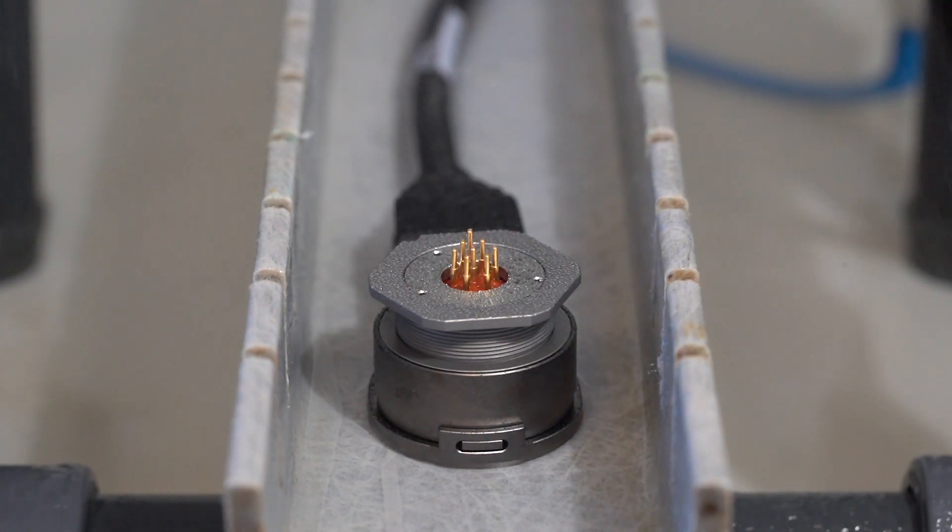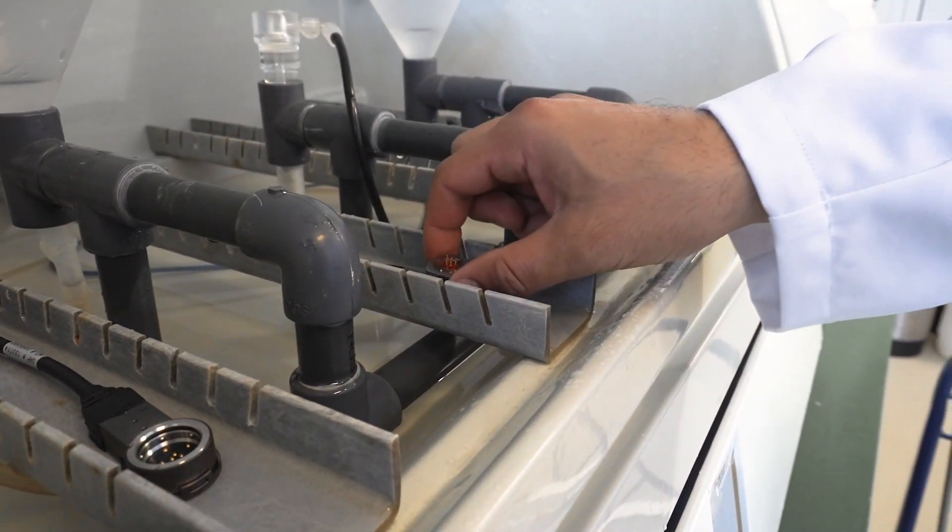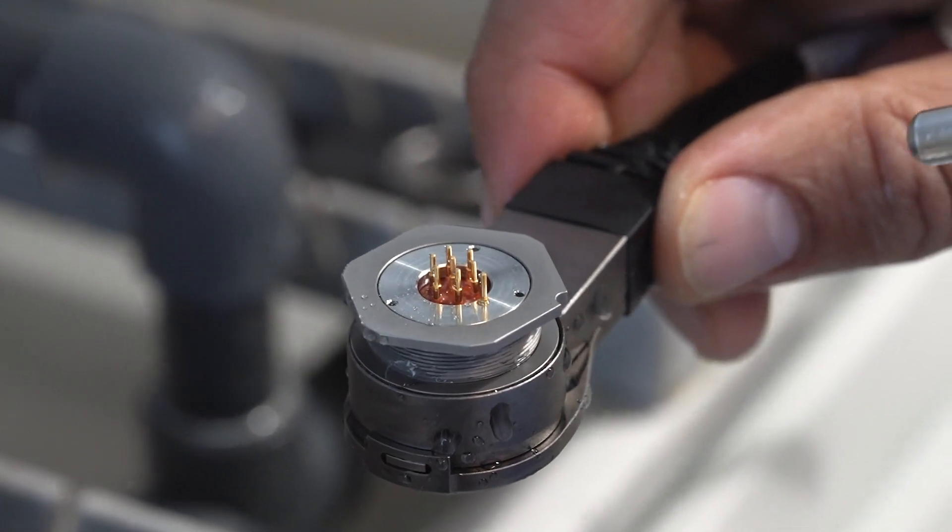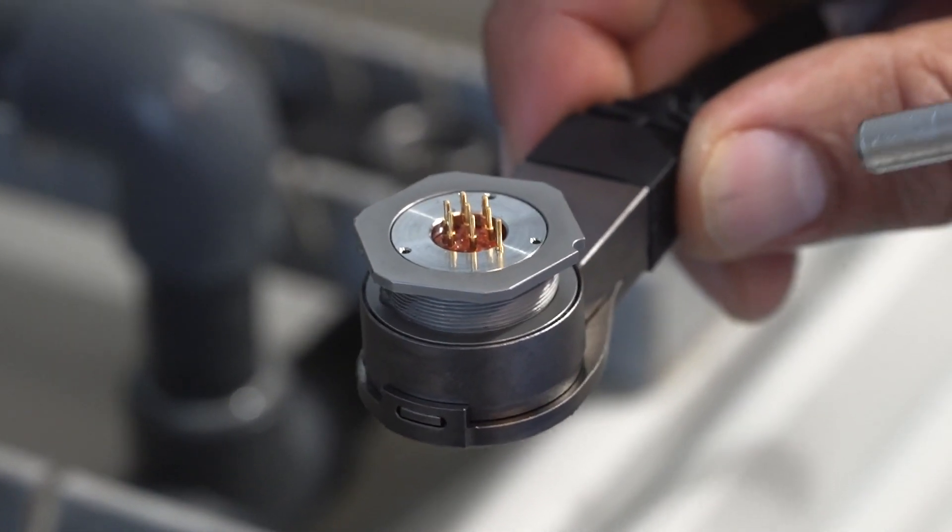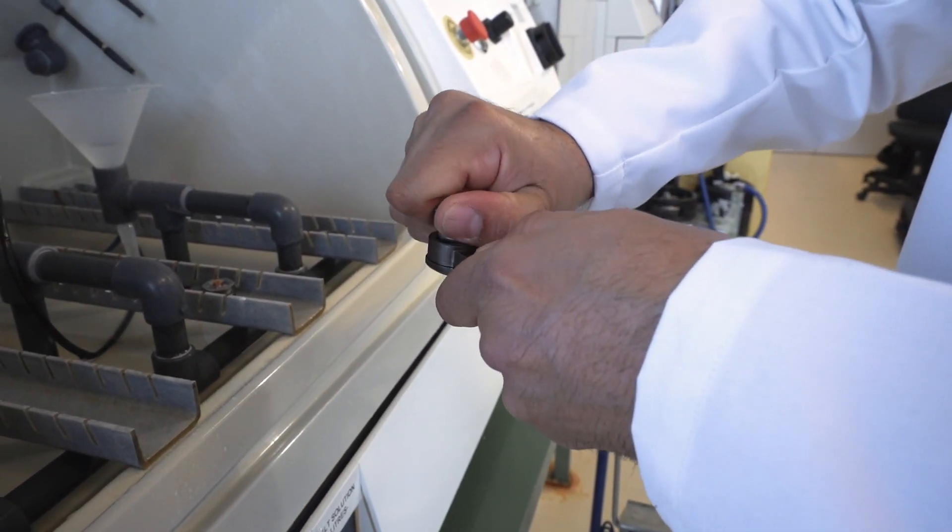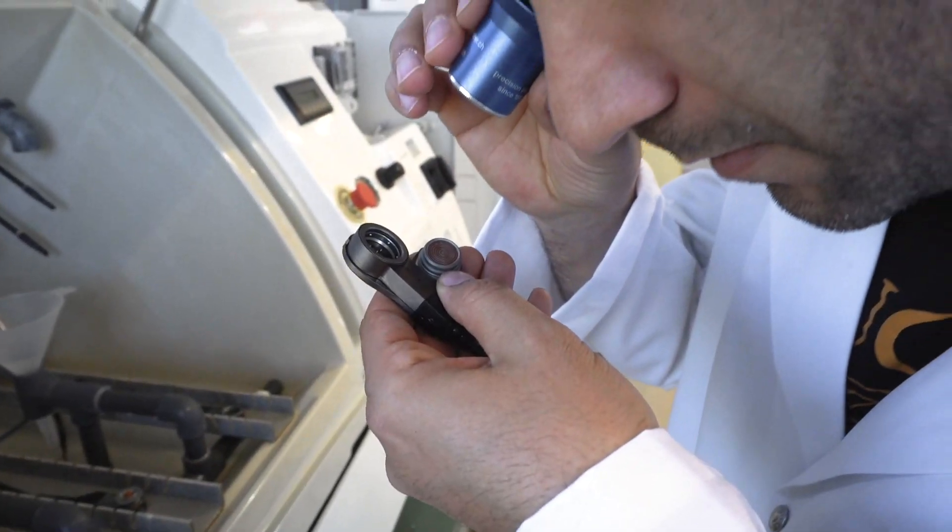After a thousand hours, the connectors are removed from their supporting racks and dried. Visual, electrical and mechanical controls are performed after the test. Cosmetic changes may appear over time without impacting mechanical or electrical functionalities.